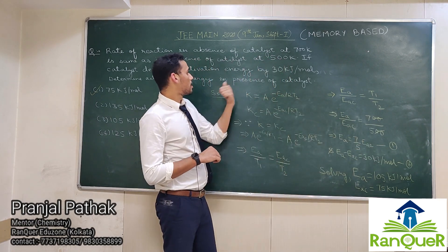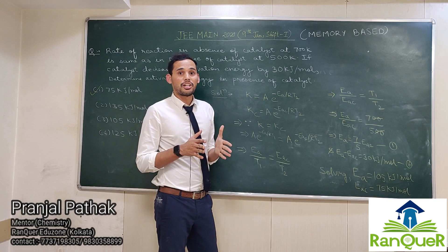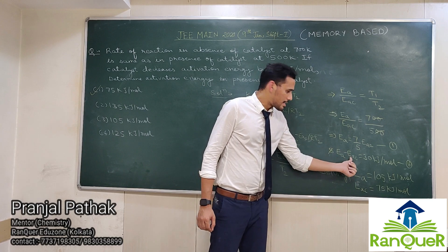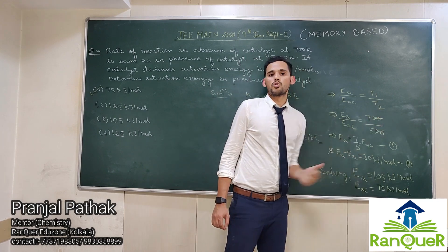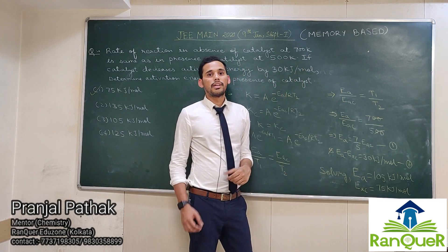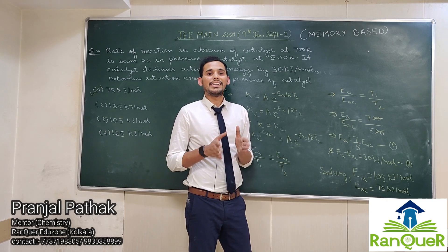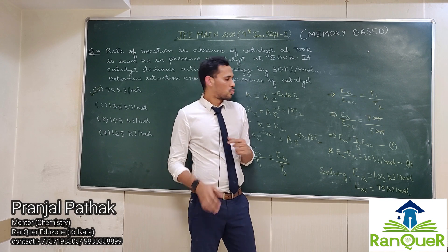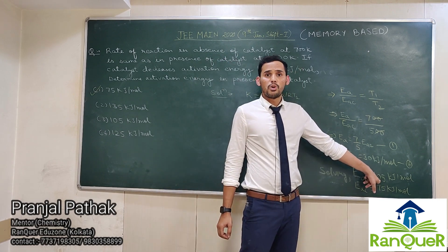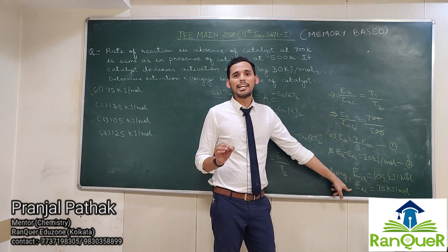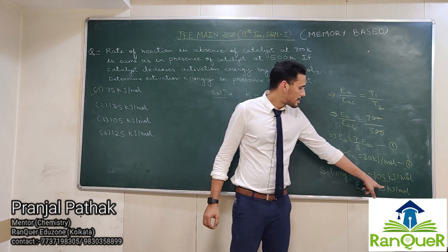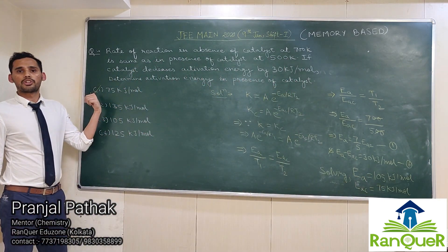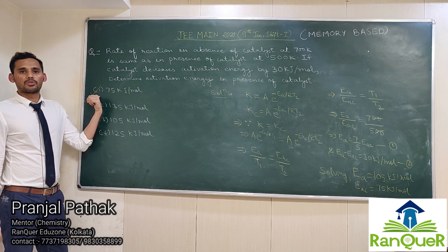Equation number 2 is given in the question itself: the decrease in activation energy is 30 kJ per mole, so Ea minus Eac equals 30 kJ per mole. Solving these two equations for the two variables Ea and Eac — since Eac is less than Ea — Ea comes out to be 105 kJ per mole, and Eac is 30 kJ per mole less than Ea, which gives 75 kJ per mole. The correct answer is option 1: 75 kJ per mole.